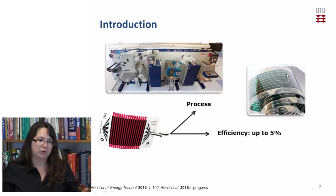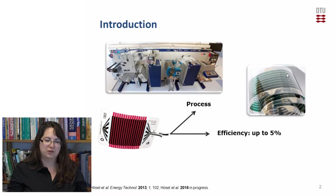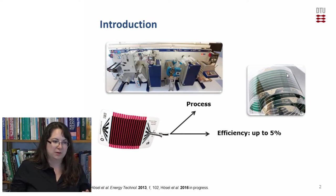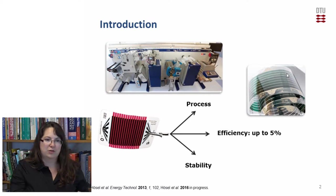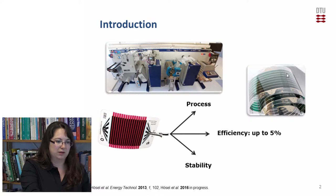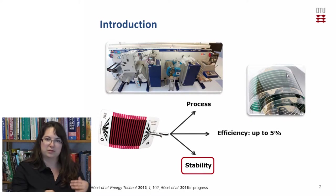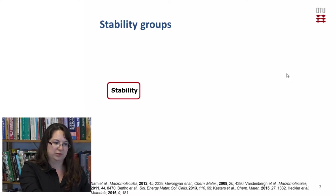Also in our group of course we have a focus on the efficiency and nowadays we get efficiencies of up to 5% for these large devices. A third focus is also the stability and the stability of polymer solar cells is where my work will contribute. In my work specifically I will focus on the stability of polymers and of the active layer of polymer solar cells.